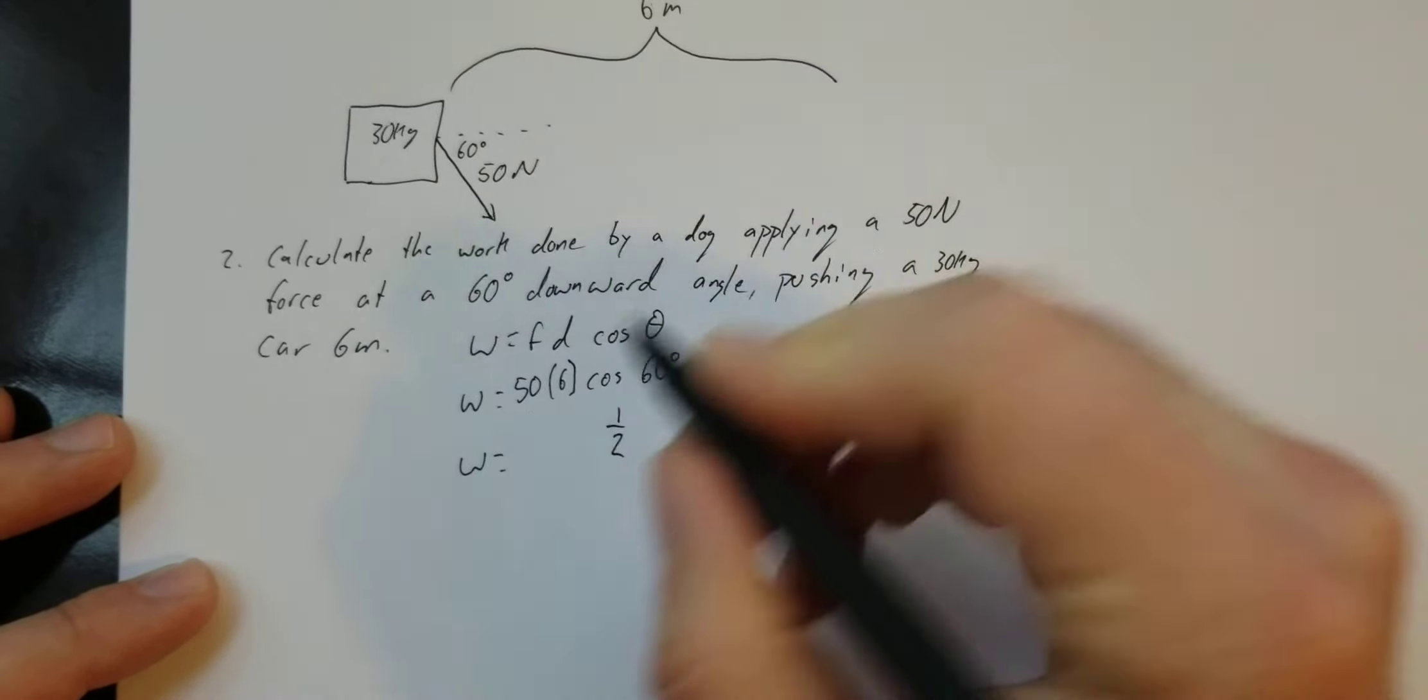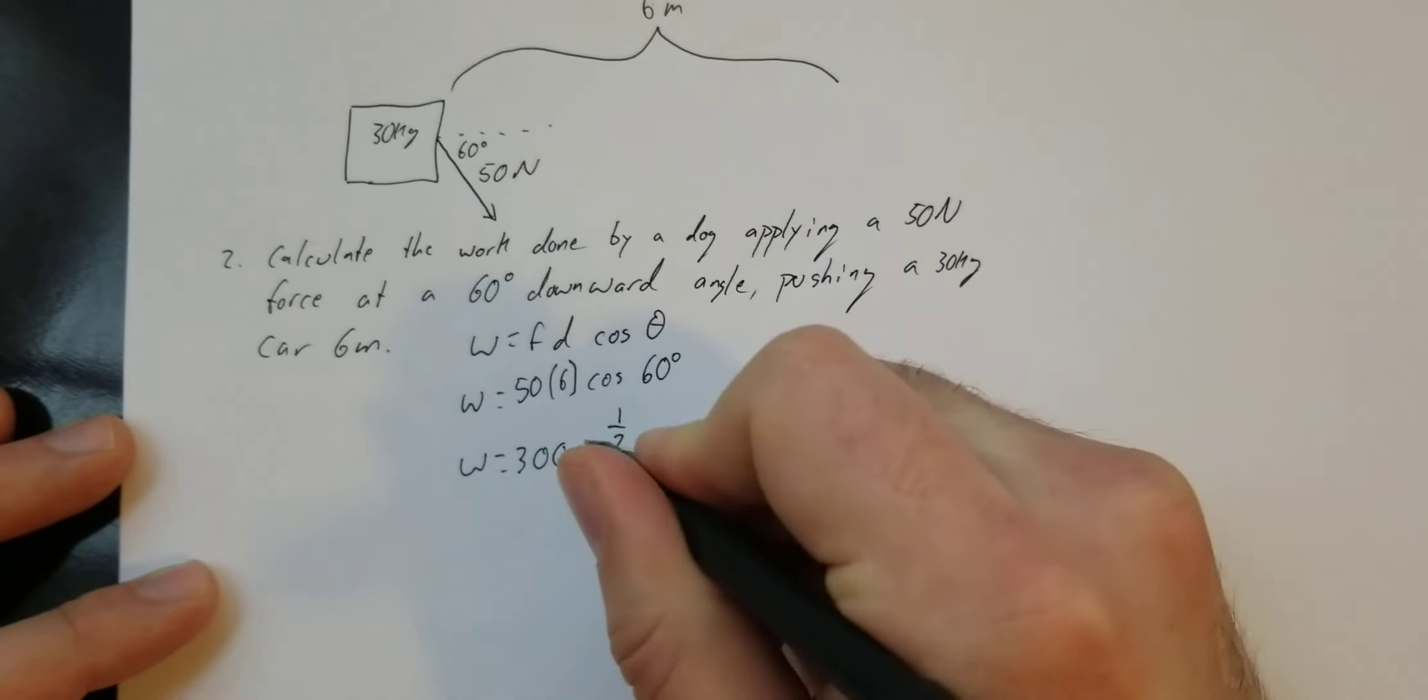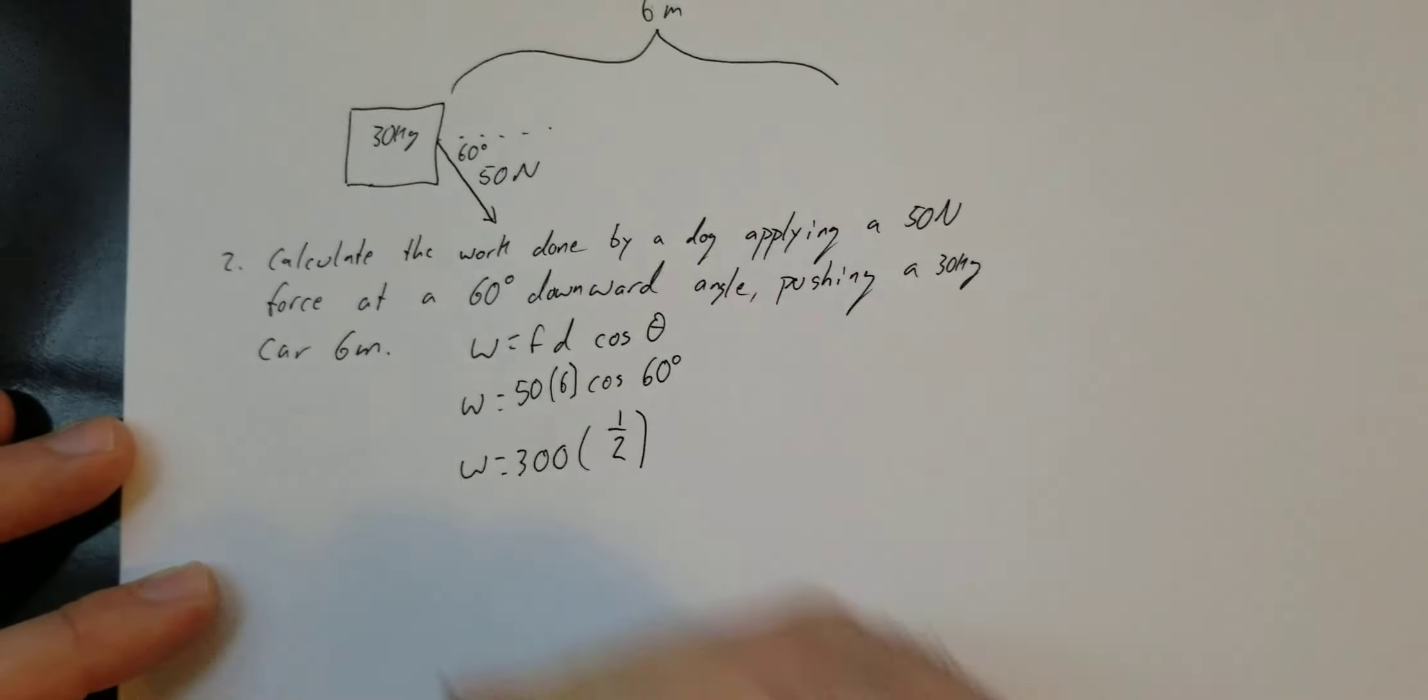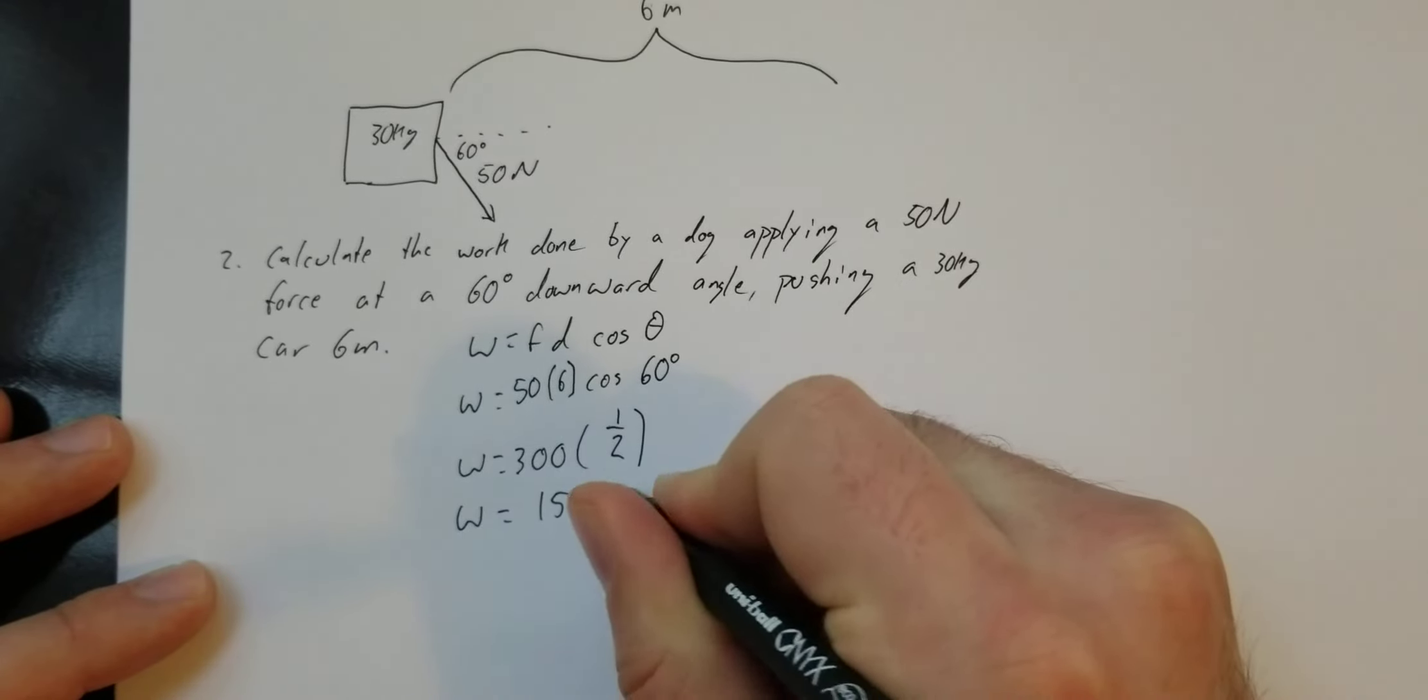So work equals 6 times 5 is 30. So 300 times one-half. So the work is 150 joules.